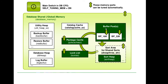The biggest of these consumers will be the buffer pool, then you have the sort heap, package cache, lock list, catalog cache, utility heap (which is for backups and restores), database heap, and log buffer. All these things sum up to the database memory. So for example, if I allocate database memory to 5 GB, the sum of all these consumers cannot exceed 5 GB.